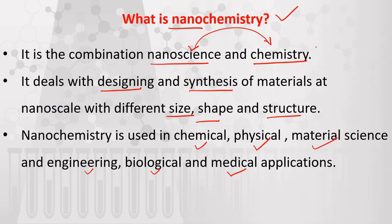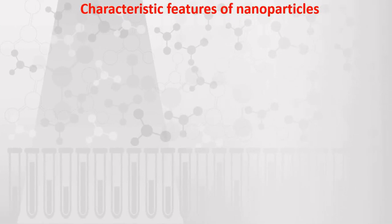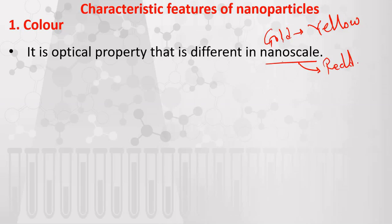So what are the characteristic features of these nanoparticles? The first property is color — that is an optical property which is different at the nanoscale. For example, gold is yellowish in color at the bulk molecular level, but if you go to the nanoscale of gold, it appears reddish in color. So there is a change in optical property at the nanoscale.